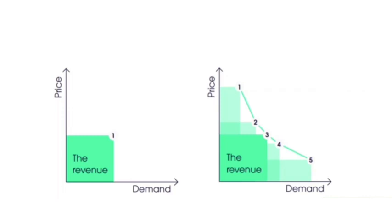Or maybe for the exact same service — let's say there are 10 spots left on a plane and you land on the website — instead of showing you price number one, they will show you price number three. Whereas another user who is perhaps an entrepreneur — they will not know, because once you log in on your account, you will not say 'I am an entrepreneur, I earn $50,000 per year, I have a house, I've got a boat.'